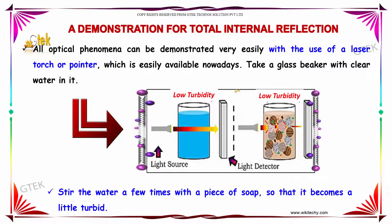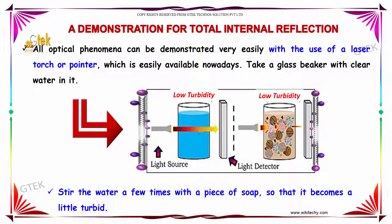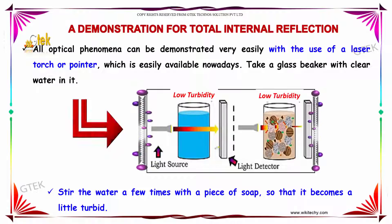Take a glass beaker with clear water in it. Stir the water a few times with a piece of soap so that it becomes slightly turbid — low turbidity.